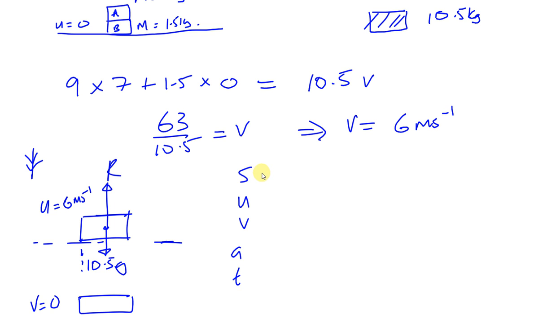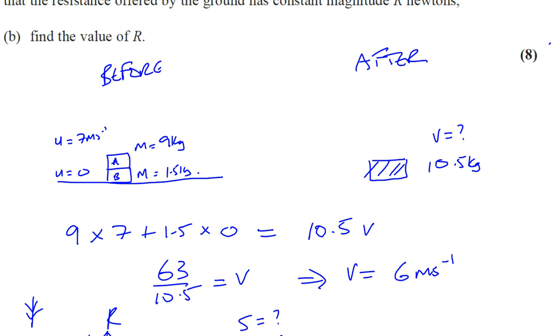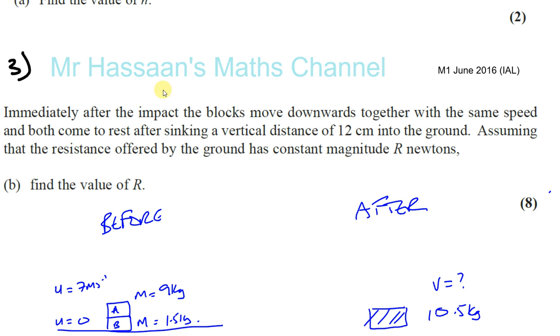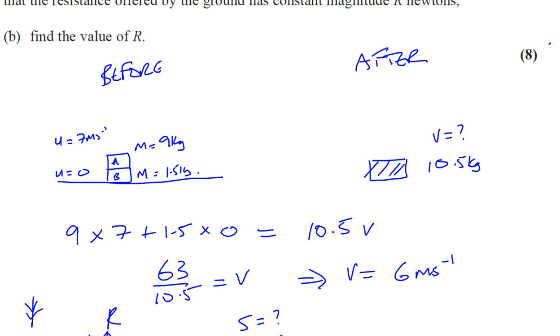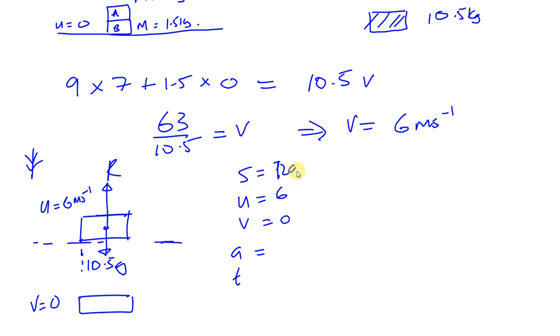Alright, so we don't know the distance. We know the initial speed is 6. We know the final speed is 0. And we need to find the acceleration. Let's see, does it say how far it goes into the ground? Yes. It goes 12 centimeters into the ground. Okay, so we know S is 12 centimeters. We want it in terms of meters so it's 0.12 meters. So we have what we need to find A.